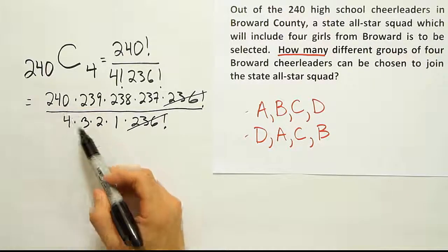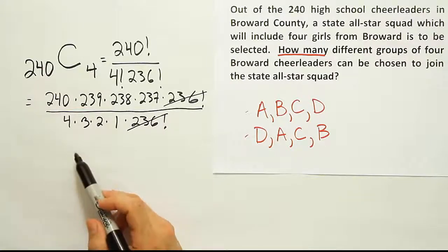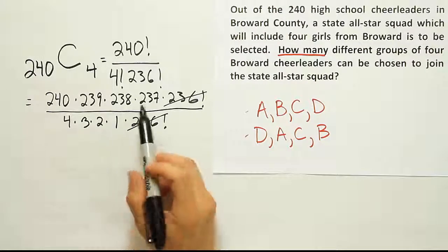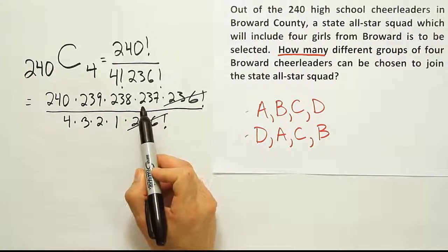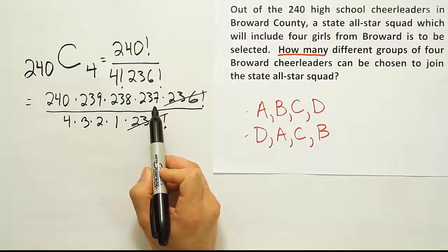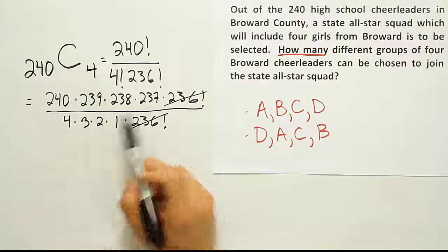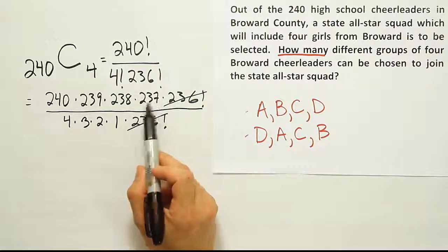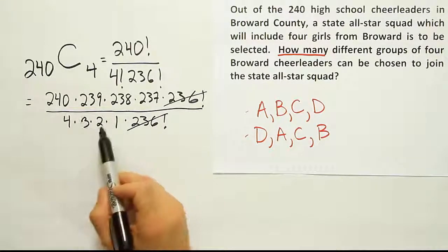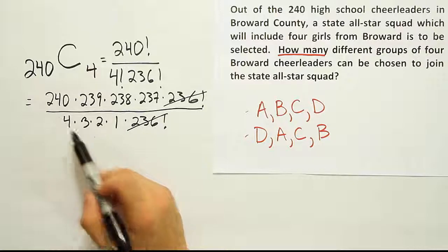You could of course go through and cancel some of these things. For example, 237 is divisible by 3. I know that because if I add 2 and 3 together I get 5, and then add that to 7 I get 12, and 12 is divisible by 3. Therefore, 3 goes into 237. That's a nice trick for divisibility by 3.